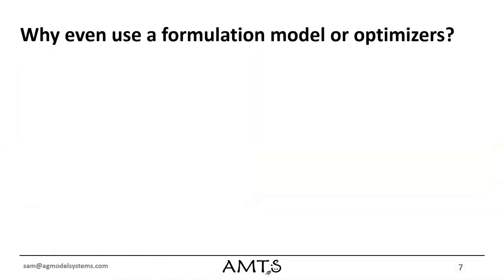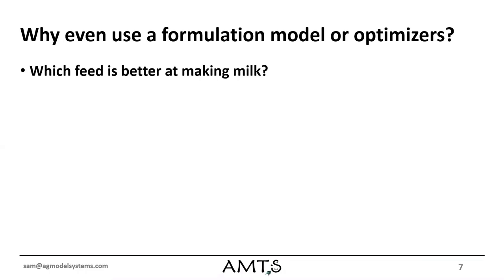So why even use a formulation model or an optimizer? We can do thought exercises — which feed is better at making milk? Corn silage or wheat straw? Corn silage is probably better at making milk than wheat straw. Whole corn grain or fine ground barley? Whole corn grain has very little rumen digestibility; it escapes the rumen before it digests and doesn't provide much energy to the cow — we end up seeing grain in the feces. Fine ground barley digests rapidly in the rumen and provides a lot more energy, so it's more efficient at making milk.